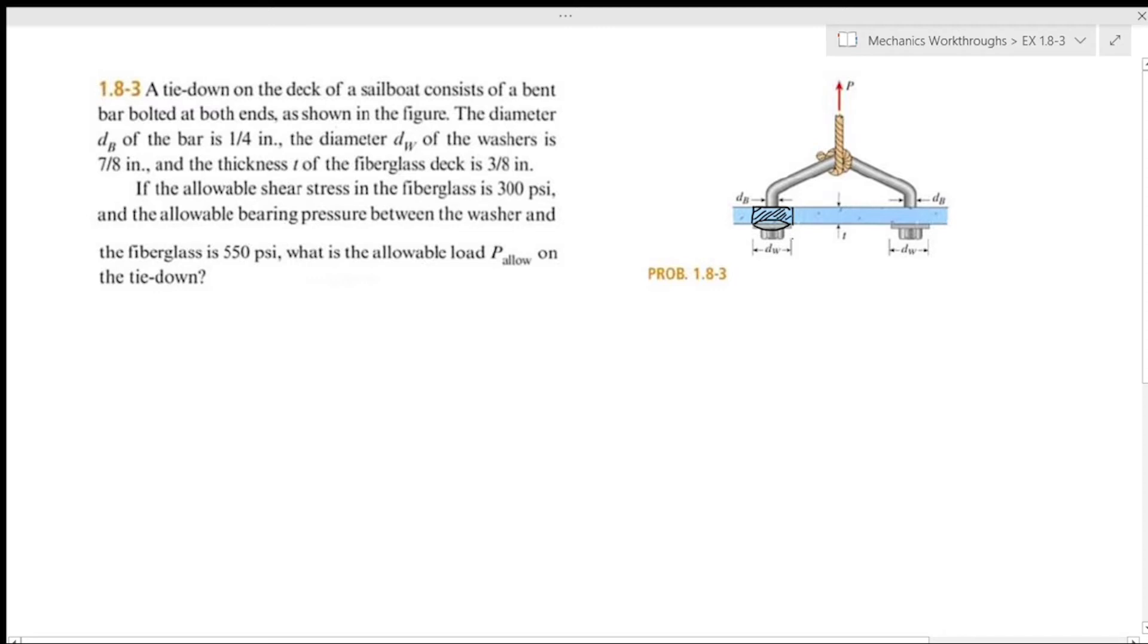It is the diameter of the washer and it acts on this outer surface of that cylinder. I'm going to call this our shear area, A_s. And for our allowable bearing pressure, it's the area between the fiberglass and the washer. So basically the bottom surface of that same cylinder, and that is our bearing area.